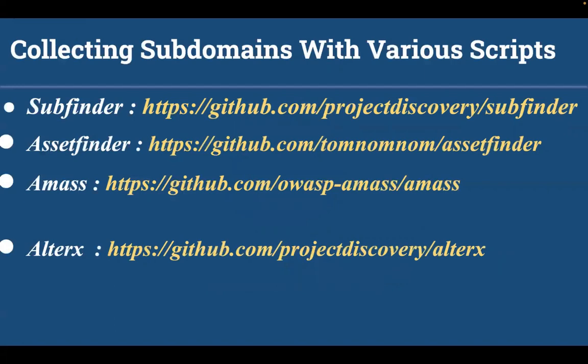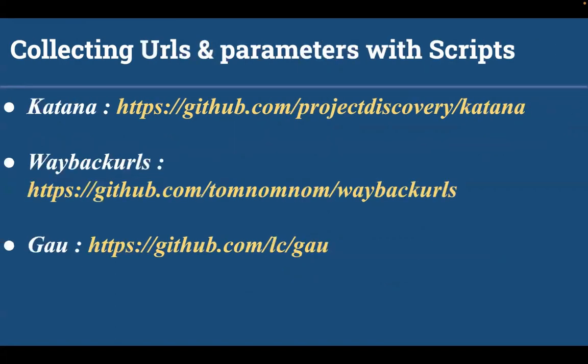If you want to collect subdomains, I use these scripts — available on GitHub: subfinder, assetfinder, amass, and altrax. After collecting subdomains, I collect URLs and parameters with scripts like katana, waybackurls, and gao. After collecting URLs and filtering them out, you can find various parameters to test for different vulnerabilities. So let's check out how to do that.